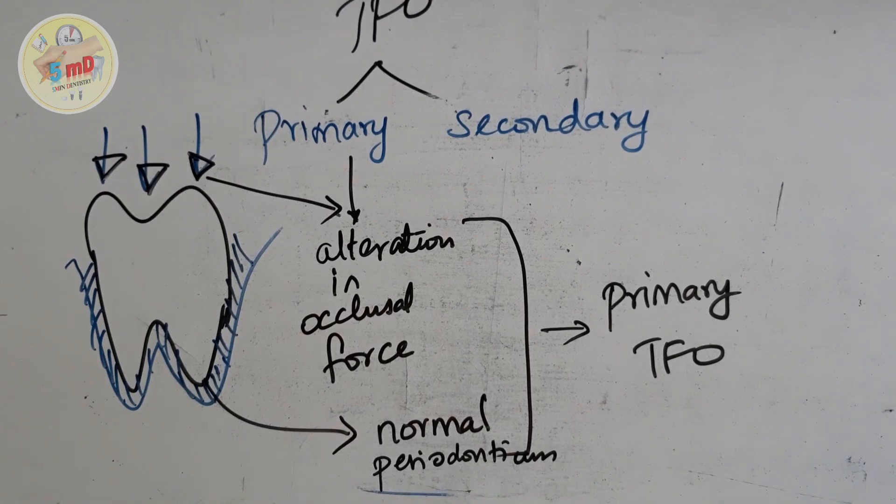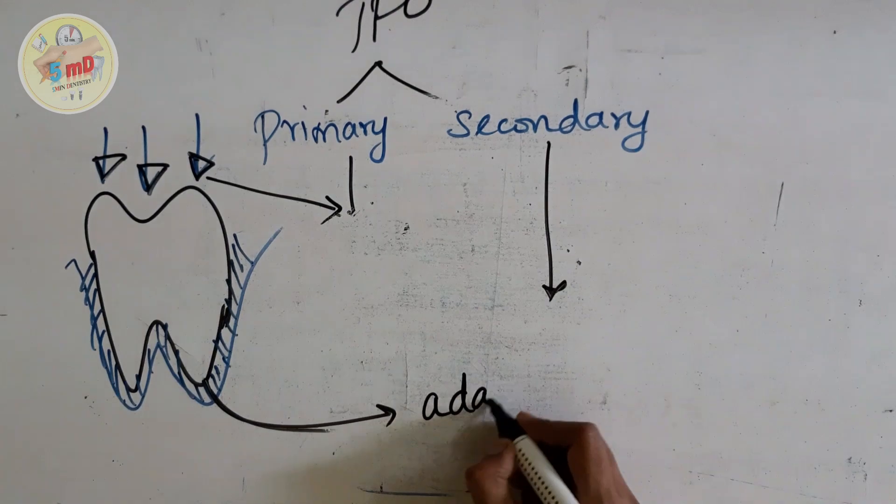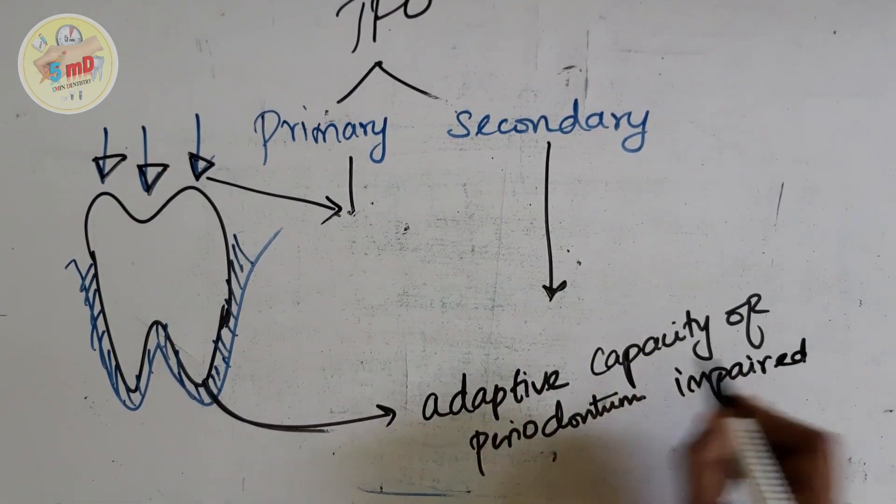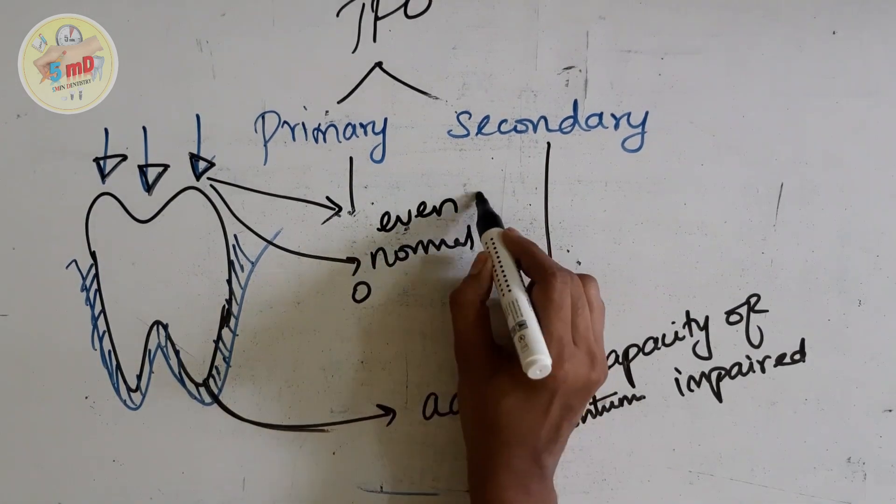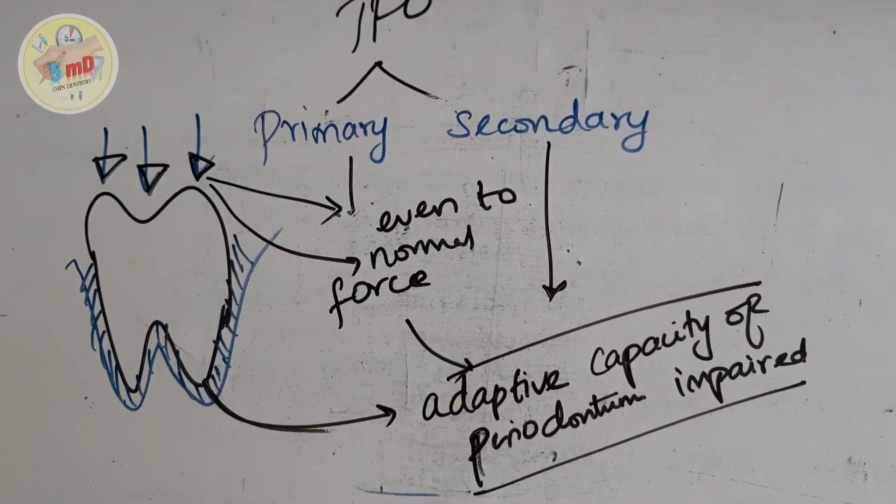That is, in secondary TFO, the periodontium is compromised. Even for normal occlusal forces, we have excessive trauma. So the point to remember is, in secondary TFO, the adaptive capacity of the periodontium is impaired, like in periodontitis.